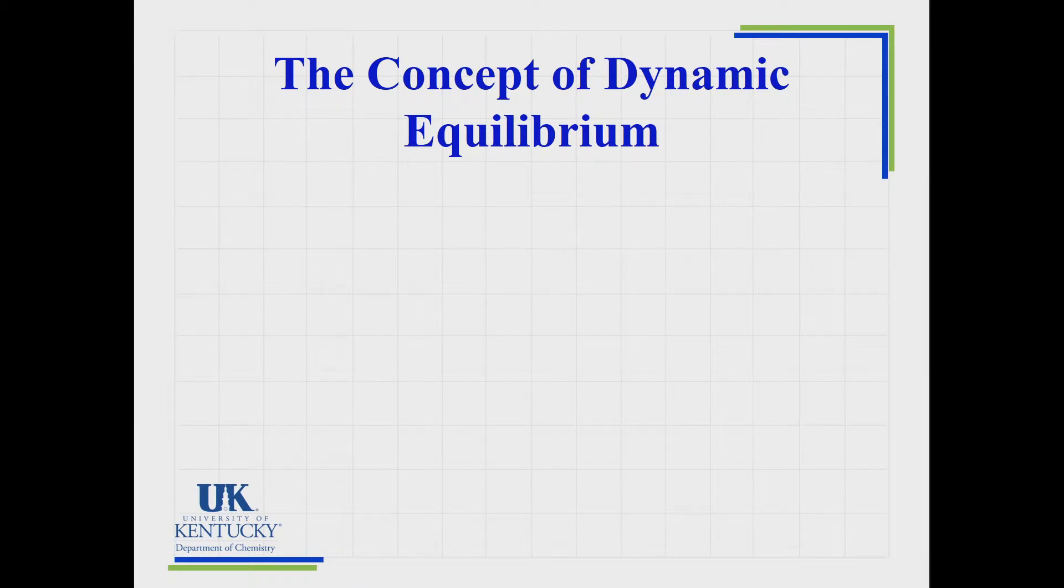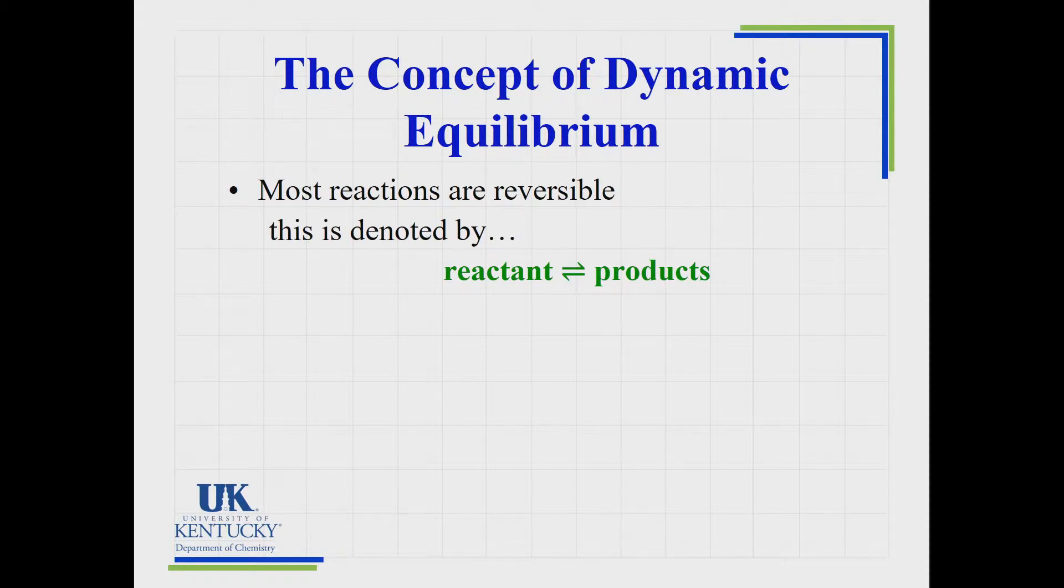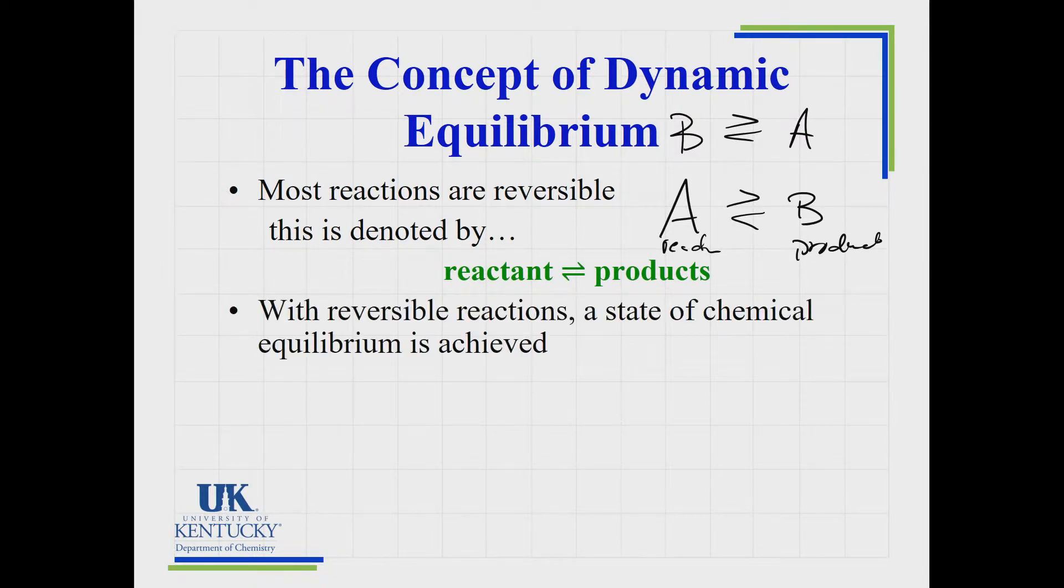The concept of a dynamic equilibrium is not completely new to us. Any time you have a reaction that is reversible, and most reactions are, we can denote it with that double-sided arrow. Reactants on the left, products on the right, we keep that language even though since it's reversible it could be written the opposite way. We keep the language that what sits on the left is the reactant and what sits on the right is the product.